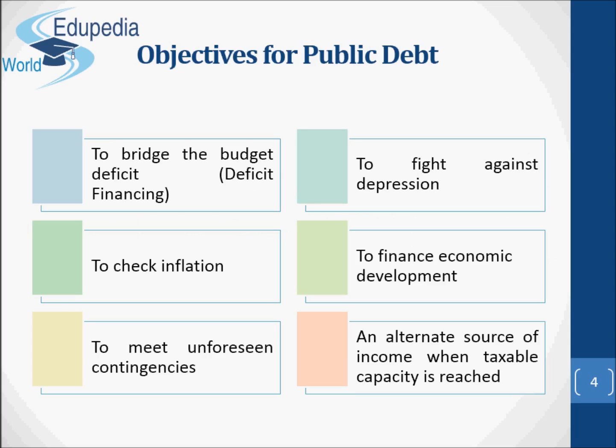Till the beginning of the 20th century, the state performed only very limited functions — maintenance of law and order, protection of the country from external attack, etc. Therefore, the state had to collect only small revenue and little debt. Recently, in almost all countries of the world, there has been a great increase in the magnitude and variety of governmental activities. The acceptance of the principle of the welfare state increases the role of state participation in economic activity, necessitating additional sources of finance. Hence, modern governments have come to rely on public borrowings.